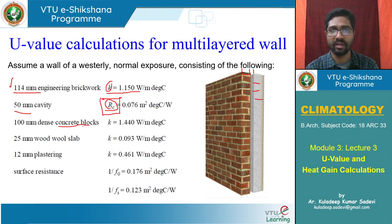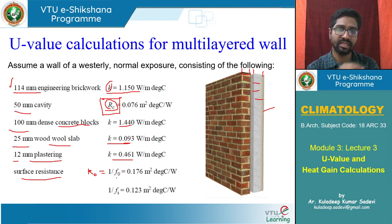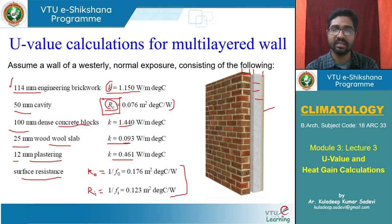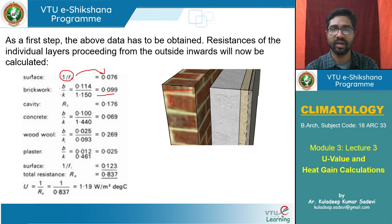Then we have concrete blocks with conductivity and thickness giving R = 0.069 m²·K/W. Then wood wool slab with R = 2.269 m²·K/W calculated from conductivity and thickness. Then plastering with conductivity and thickness again. Surface resistances are given directly — the outdoor surface resistance R₀ = 1/F₀ (surface conductance), and inner surface resistance Rᵢ. Three layers have direct R-values; other layers require conductivity and thickness.